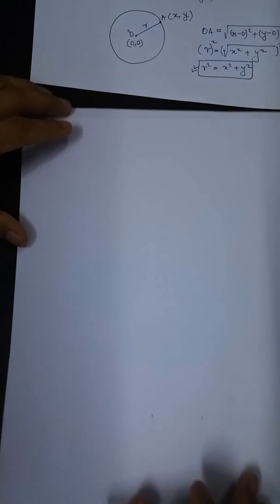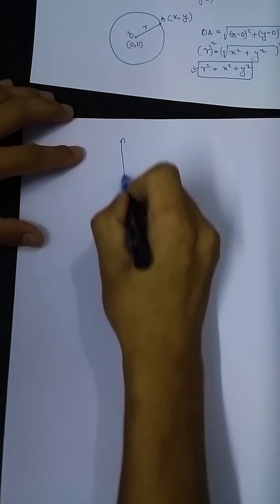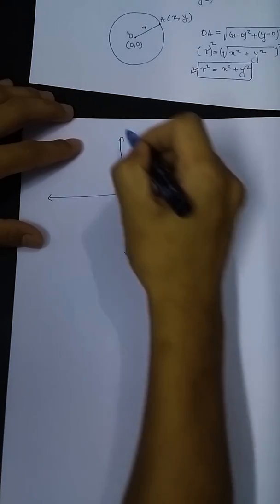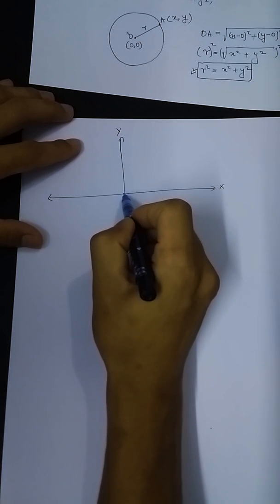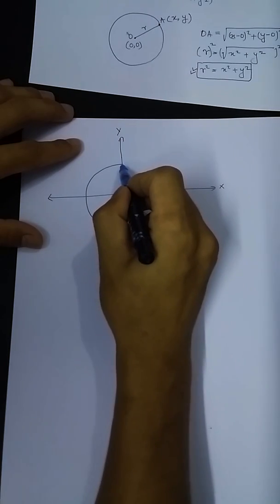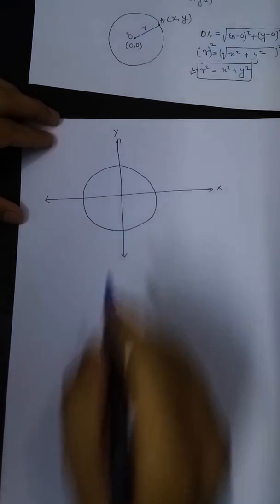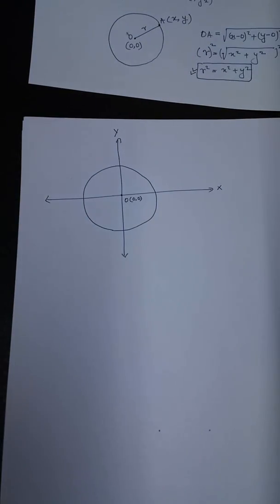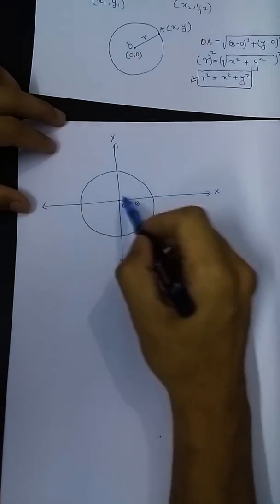Here we are going to show you what we are going to do with the x-axis and y-axis. We can see the origin. So this is the radius — we have the radius, and we are going to see the radius.